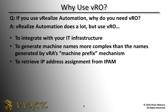So instead of using VRA's network profile mechanism, you can have VRA call out to VRO. And VRO can talk to whatever your IPAM solution is, get an IP address, register the machine, and then VRA can assign that IP address to the machine.